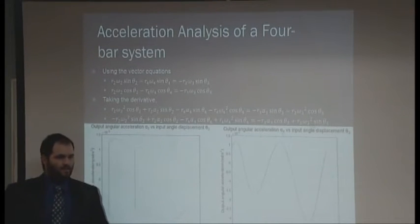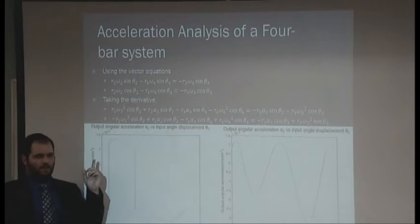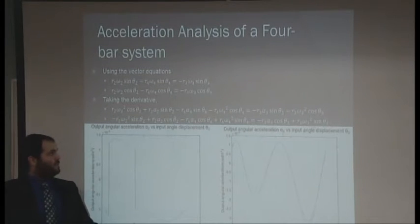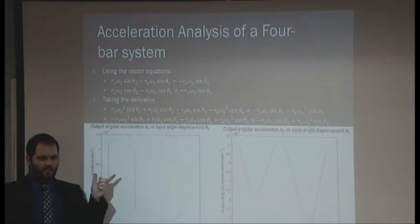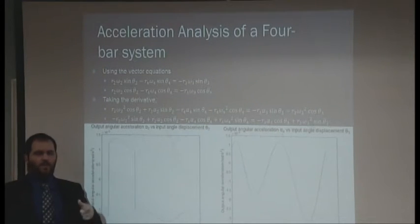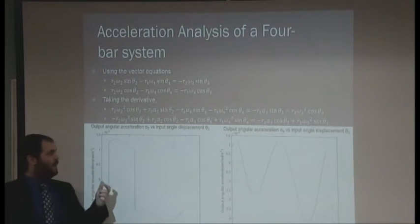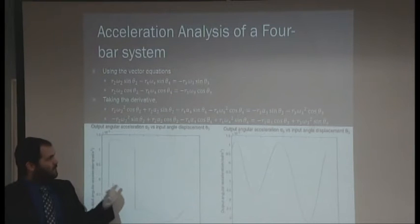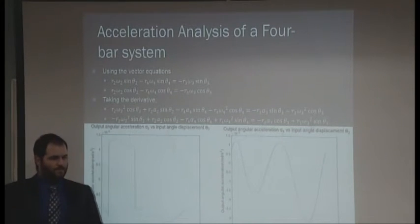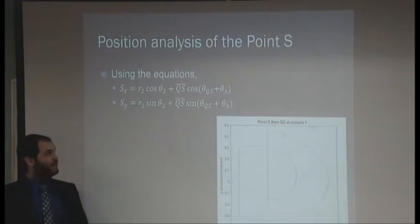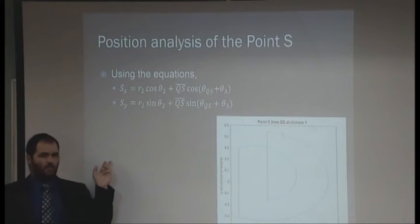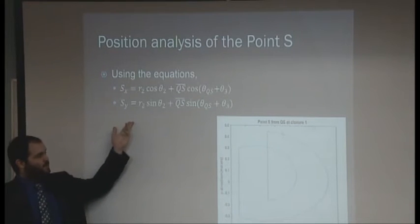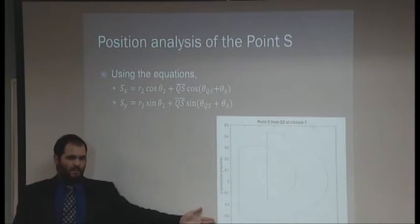Next is the acceleration analysis of the four-bar mechanism. You take the initial velocity equations, you take the derivative, which we did before, and you get the acceleration, which is what you see in the middle. These acceleration equations, you put in the position outputs that you got before, the velocity outputs you got before as well, and we get these tables of values. The output angular of link 2, the angular acceleration of link 2, and angular acceleration of link 4 with respect to the input angle. Then the position analysis of point S was simply taking the output position analysis and placing them into these equations up here so that we can see and map out the position of point S through its motion.